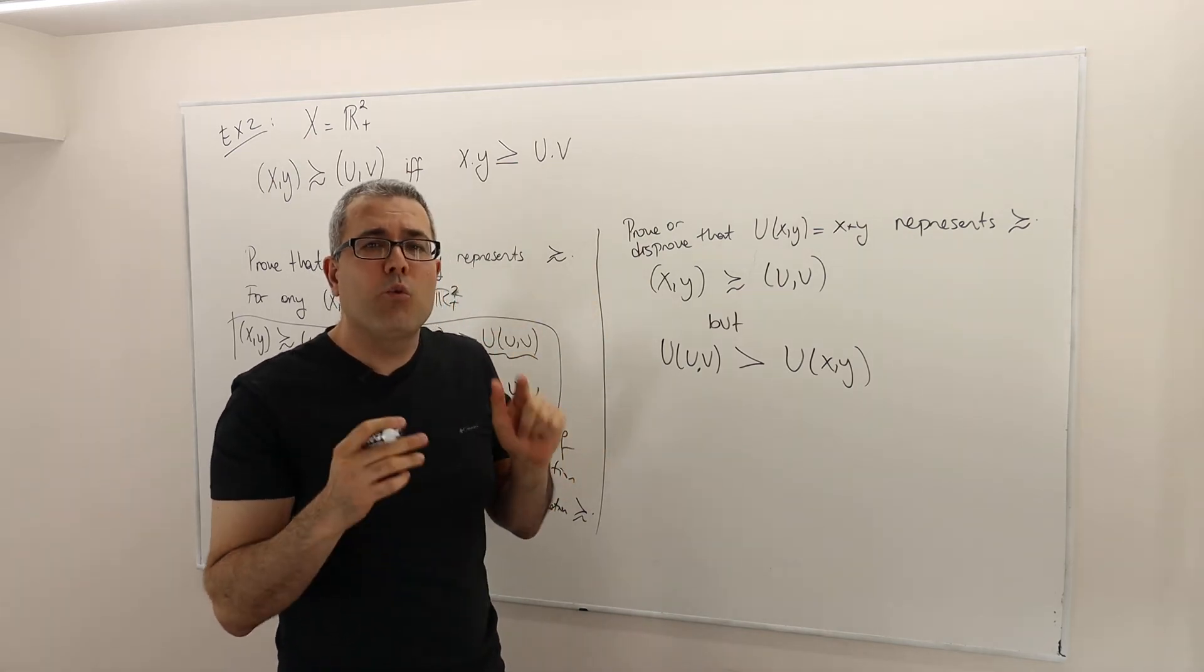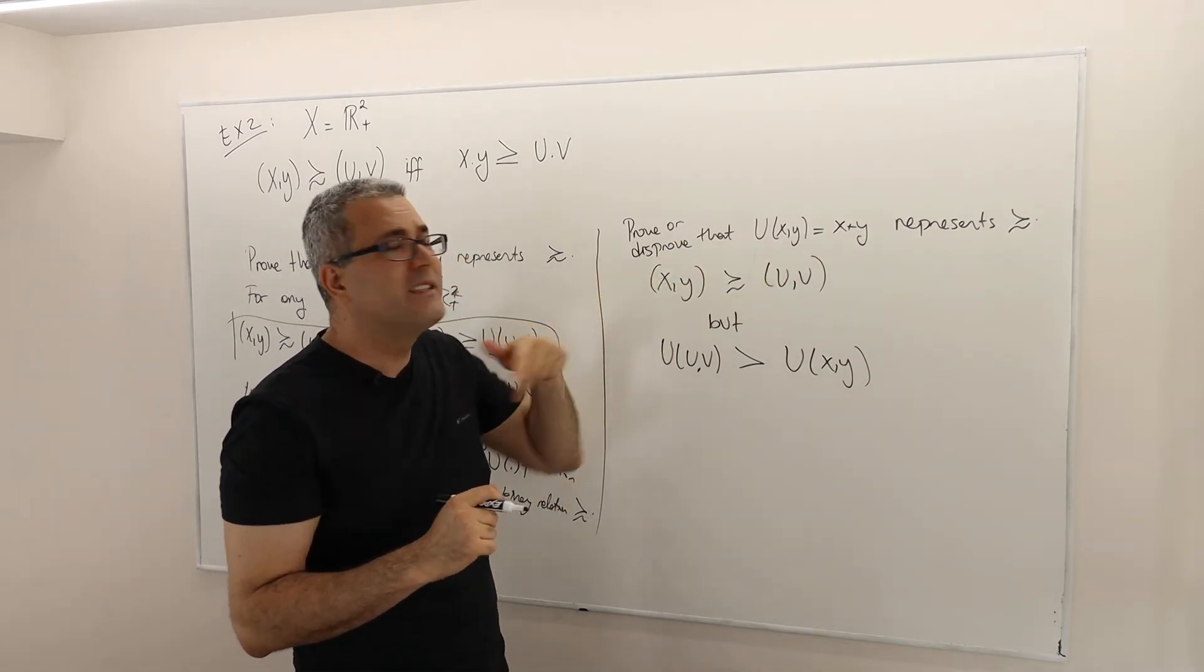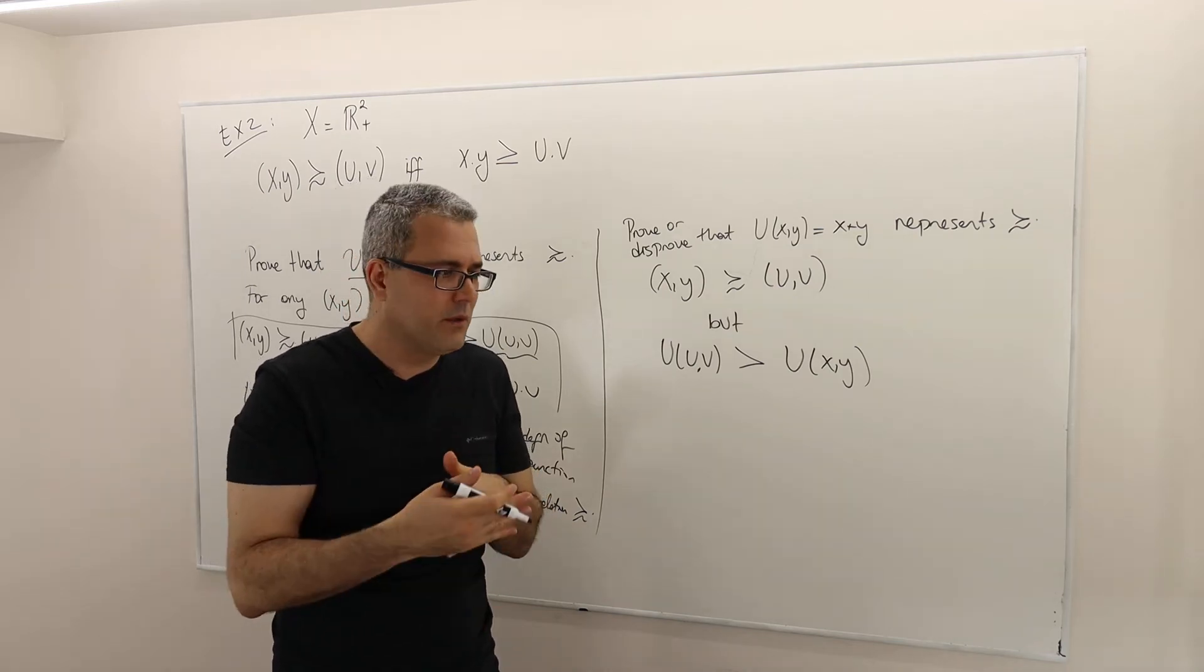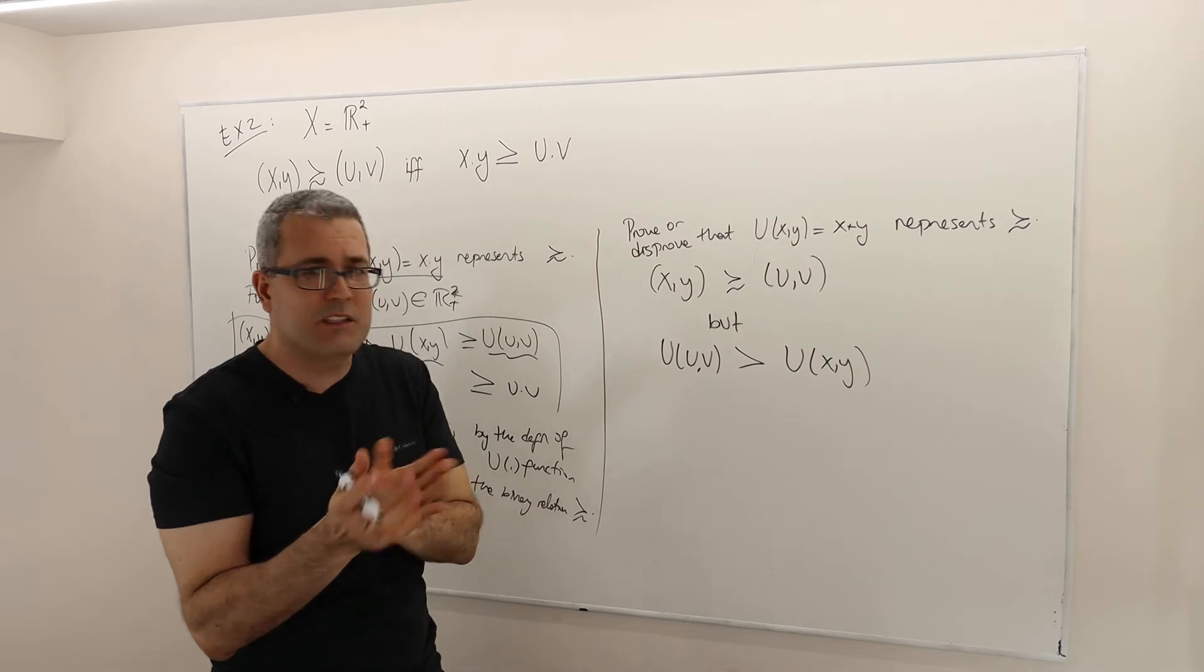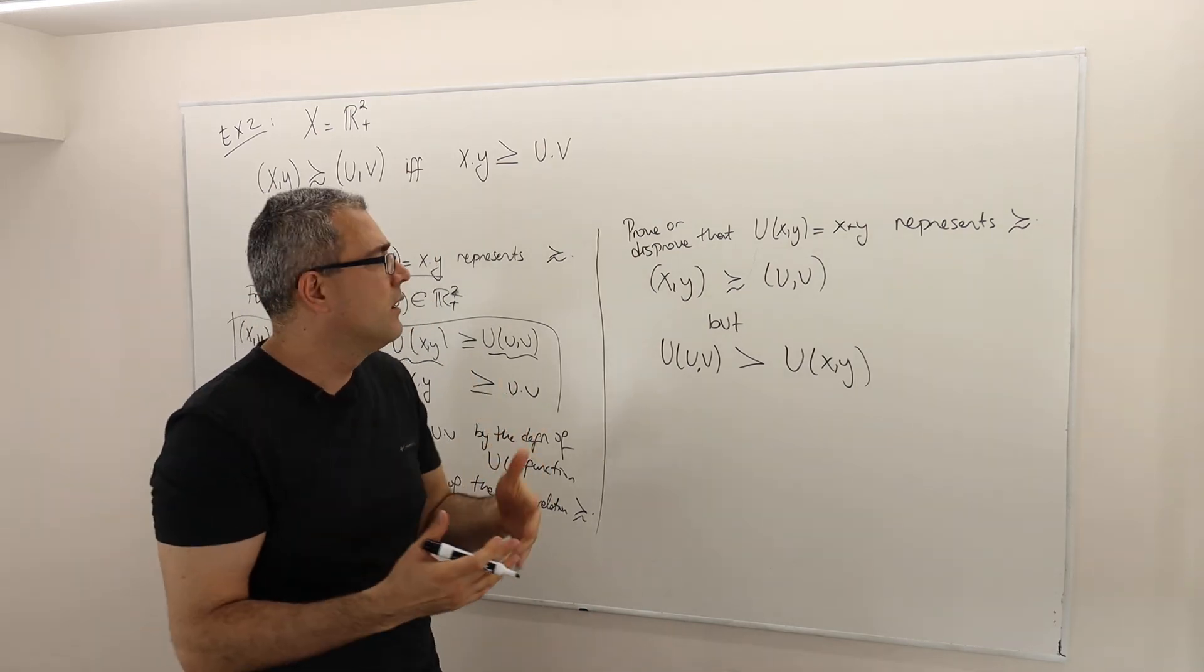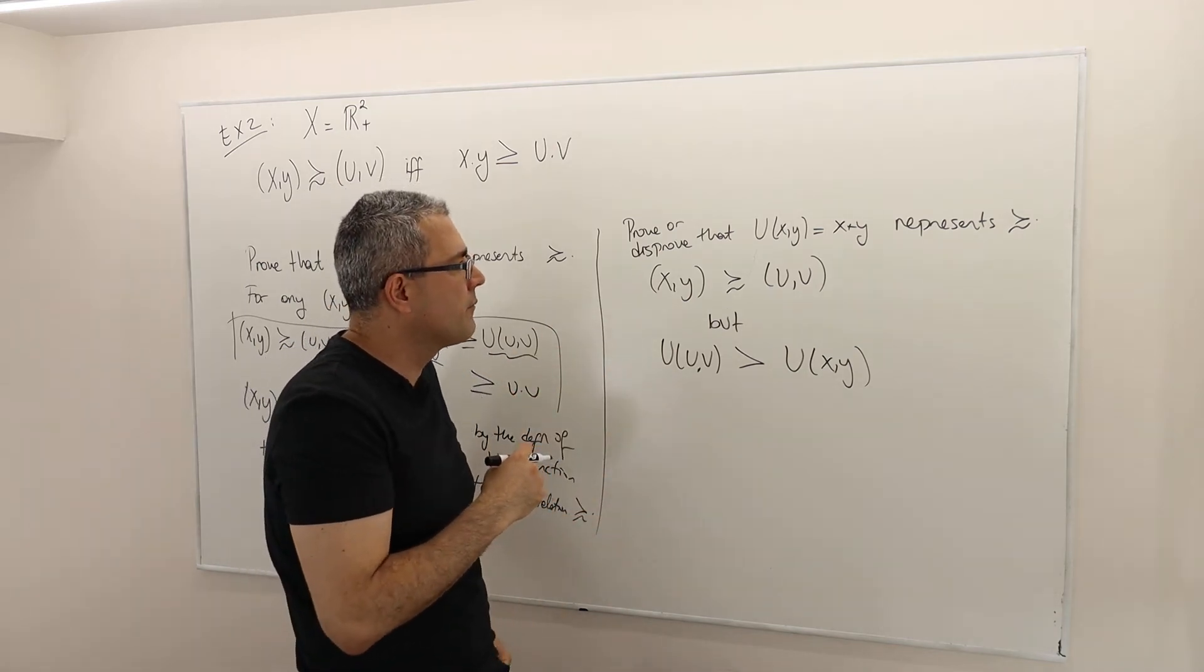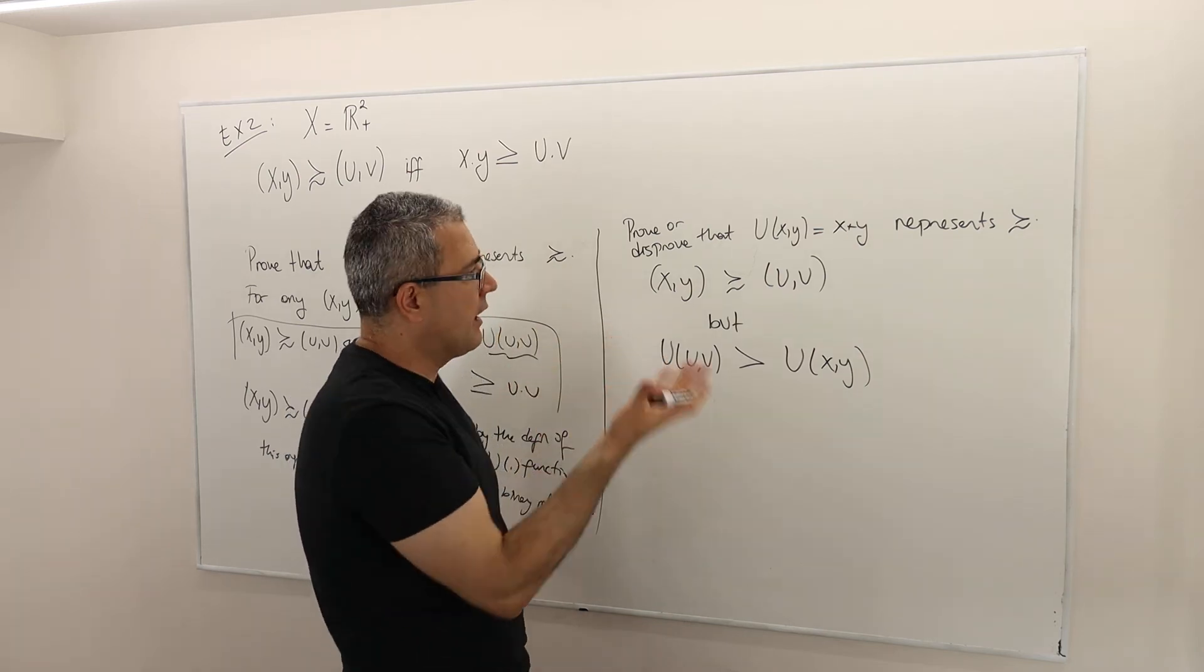If I can find such an example, then that would be the proof that this utility function is not actually representing the binary relation. It's a counter-example. I hope that is clear. If it is not, please ask me so that I can formalize it in another way.